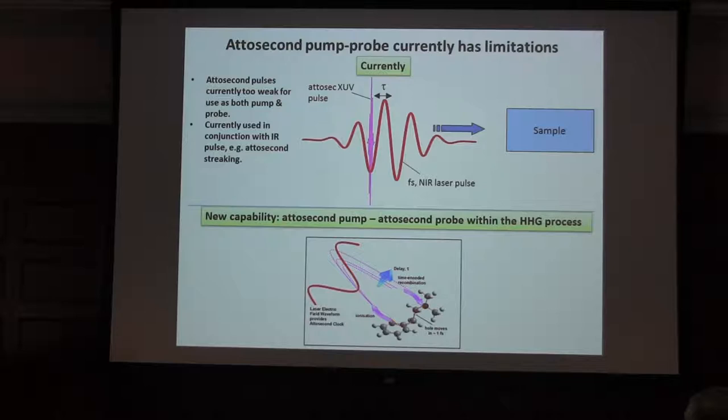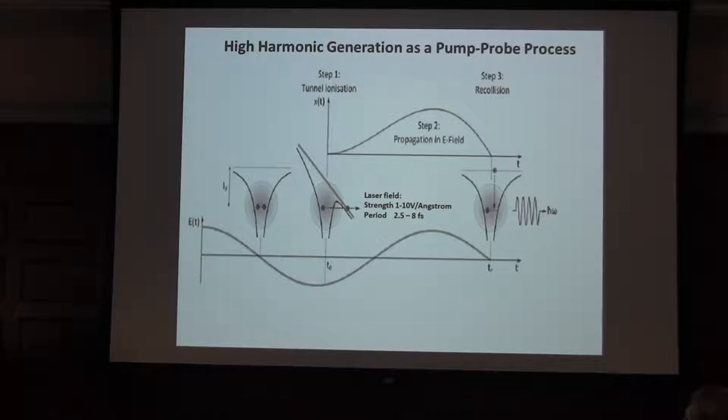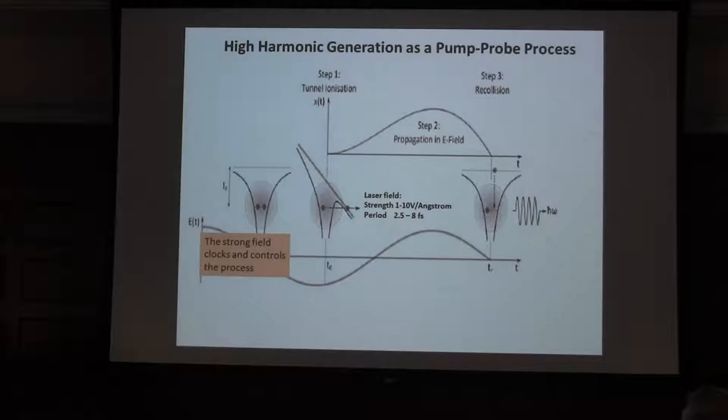This is the idea of HHG spectroscopy. So what we do in HHG spectroscopy is we use the high harmonic generation process, shown here in this sort of schematic three-step way, to clock and control the electron motion. This ionization event happens near the peak of a laser field, we then get propagation of our electron in the strong laser field, return, and recombination back into the hole it left.